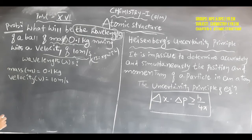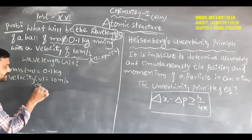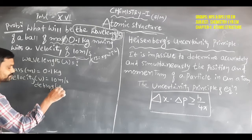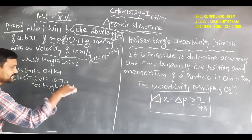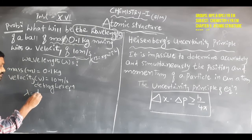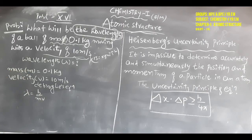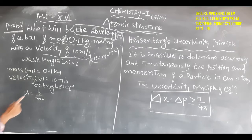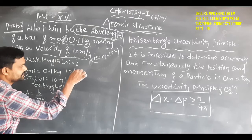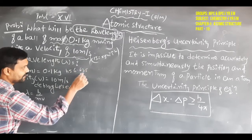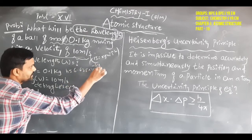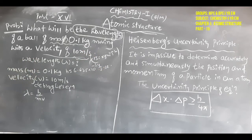Here we are using the de Broglie equation. The de Broglie equation is: lambda equals h divided by m times v. Lambda is to be found, m (mass) and v (velocity) are given in the problem. But h is not given — h is Planck's constant, with a value of 6.625 × 10⁻³⁴ joule·second.